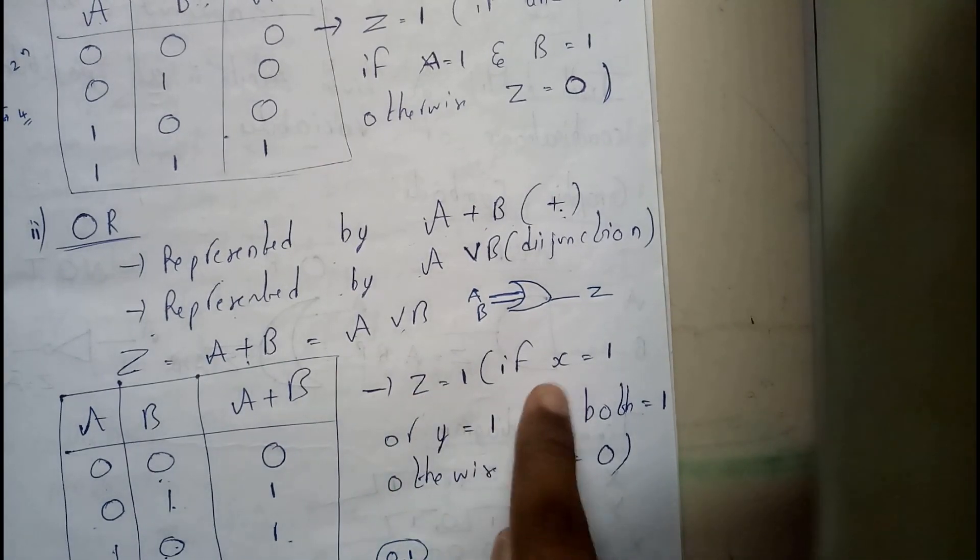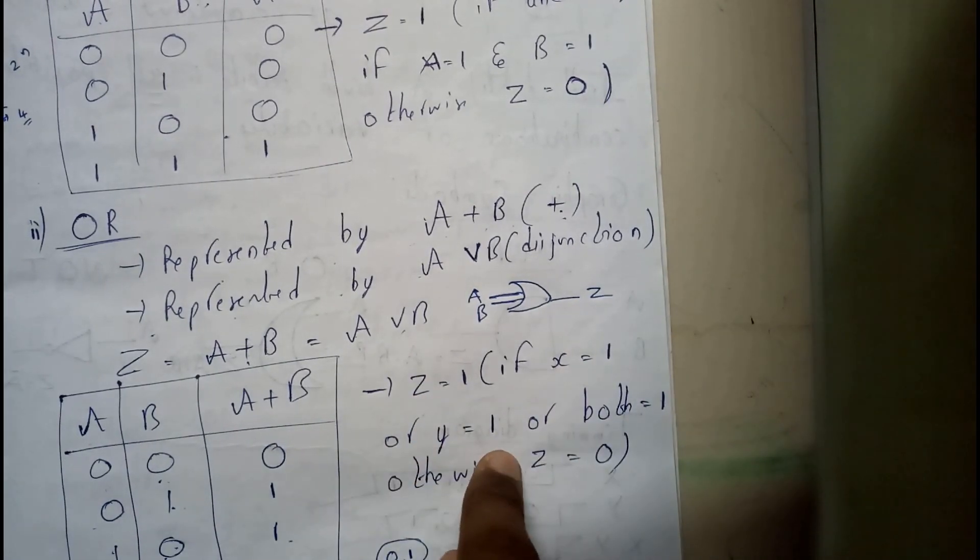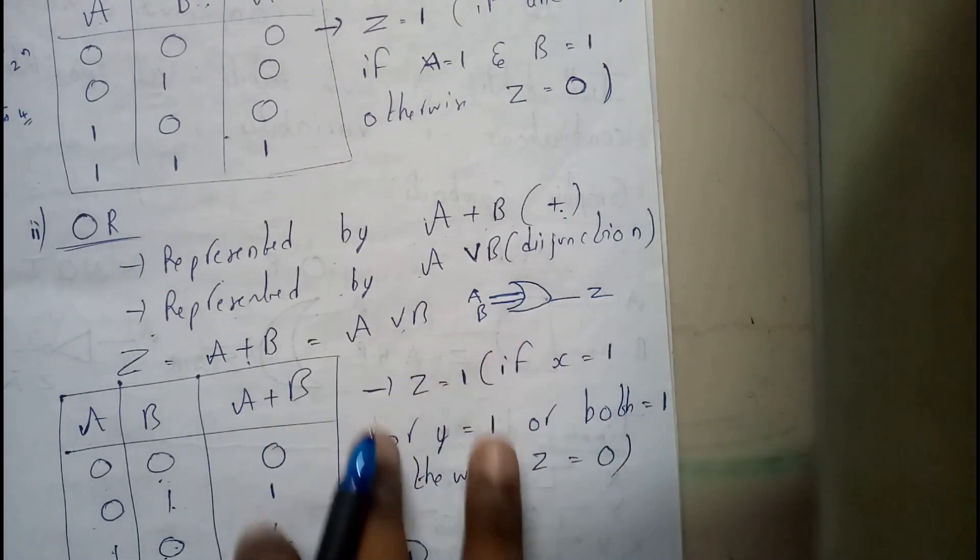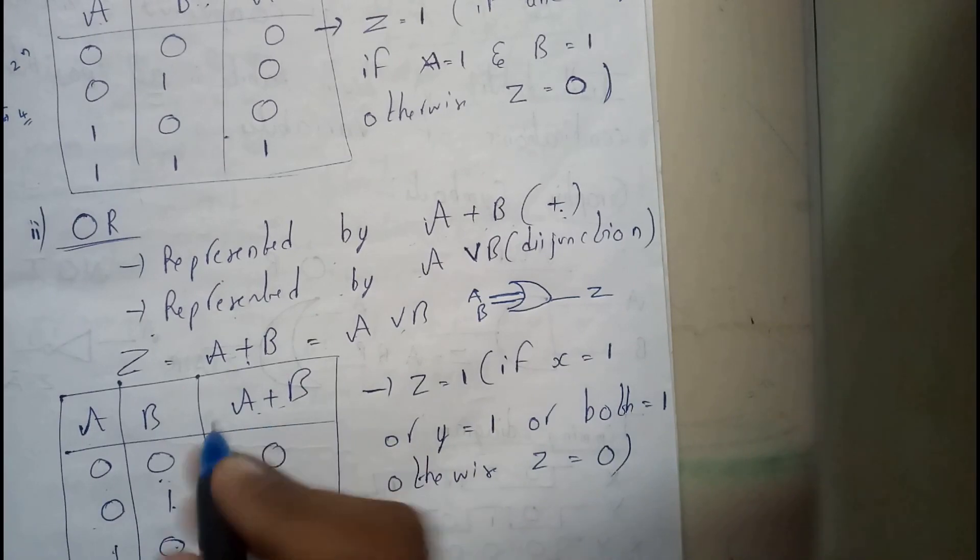So Z equals 1 if X equals 1 or Y equals 1 or both equal 1. Otherwise Z equals 0. You can write in terms of words or you can just say that it is an addition between two.